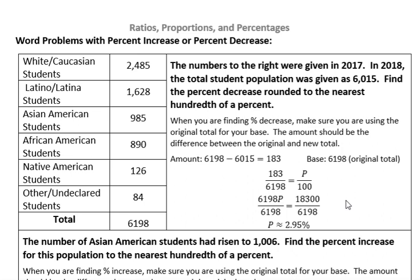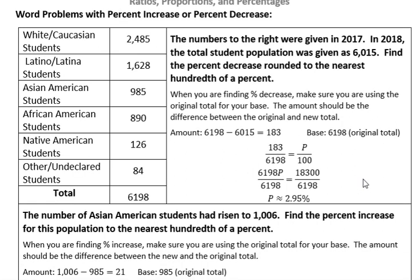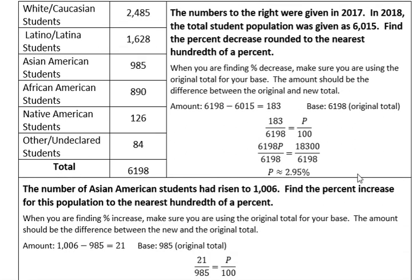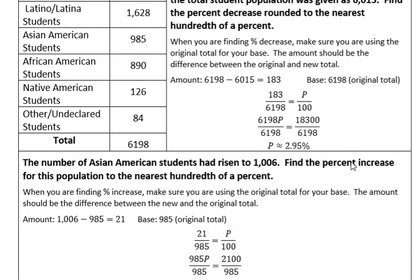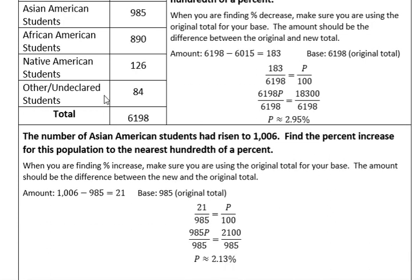Always be trying these — see if you can get the same answer and make sure it makes sense to you. Now the second question is about a percent increase, so something went up. We're using the same chart for that, but this question has to do with Asian American students.